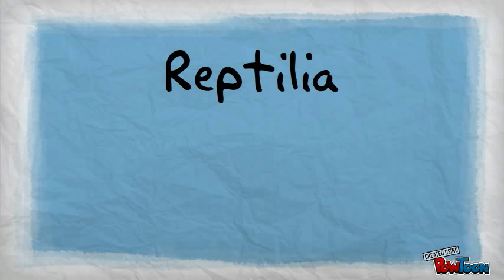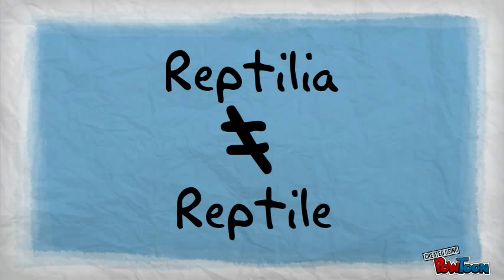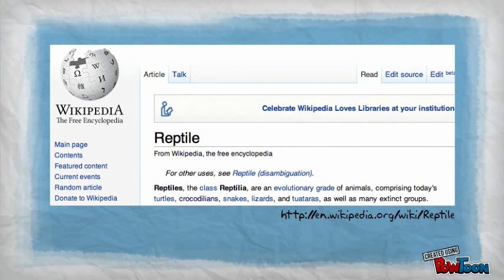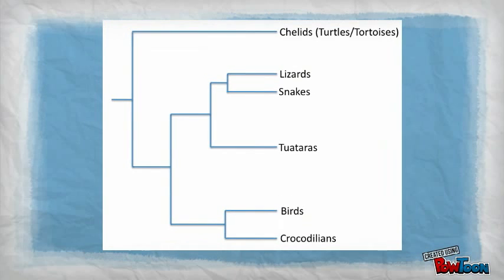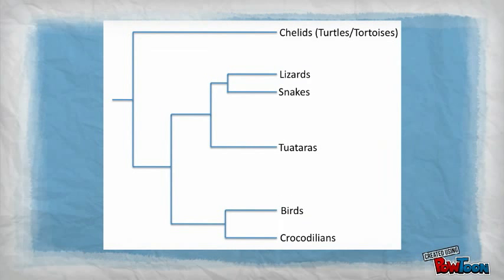Even though reptilia is a legitimate taxonomic group, it's not a synonym for reptile. This is something that even Wikipedia gets wrong. If you look at this phylogenetic tree, you'll see all the animals you listed.